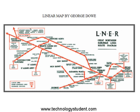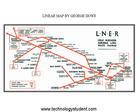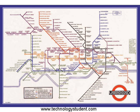George Dow had developed linear maps which were probably the precursor of map designs to follow, in particular the London Underground map of Harry Beck. Dow's maps were situated inside trains and emphasized the stations on a particular line or route, making them easier to read than a geographical map.